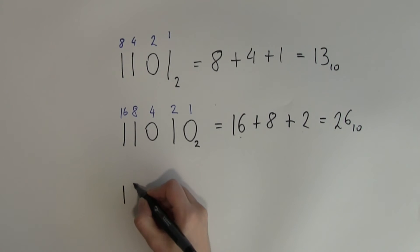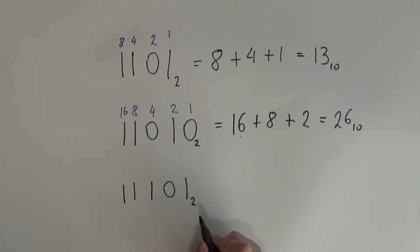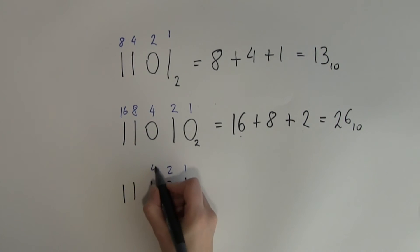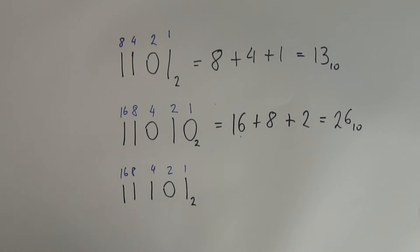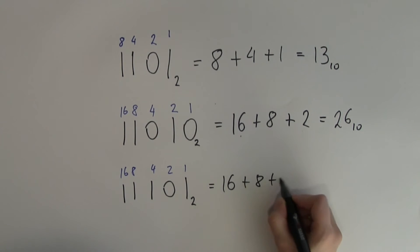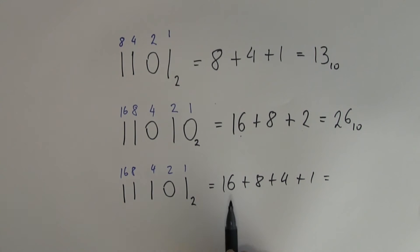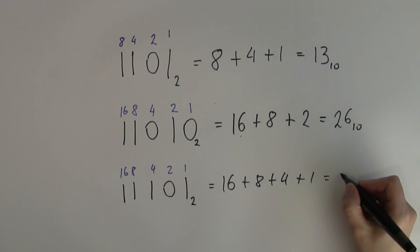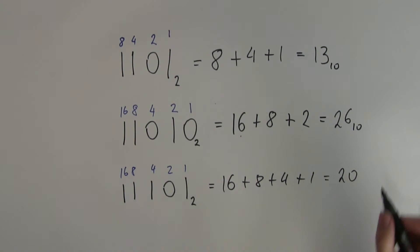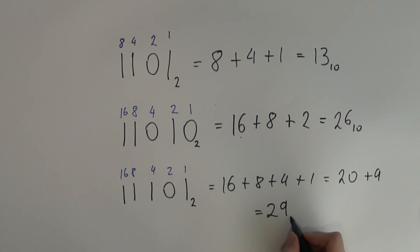Next example: 11101 in binary. Place values: 1, 2, 4, 8, 16. Which ones am I adding together? Everything except the 2. So this is 16 plus 8 plus 4 plus 1. I can pick and choose — 16 and 4 nicely adds up to 20, and 8 plus 1 gives me 9. Altogether, this number is 29 in decimal.